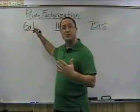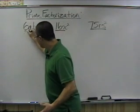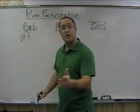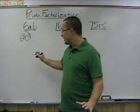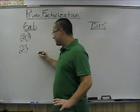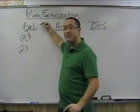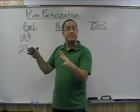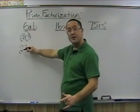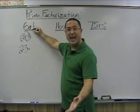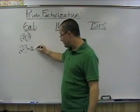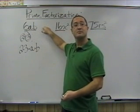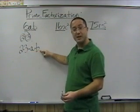Let's do 6ab. First, break down 6: it comes from 2 times 3, and both are prime. Now we have the variables a and b — we don't know what they are, so we can't break them down; we keep them as they are. So the prime factorization of the algebraic expression 6ab is 2 times 3 times a times b.